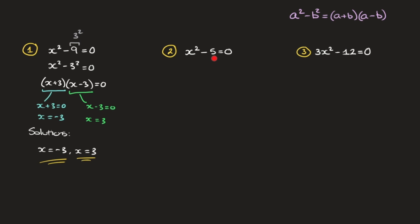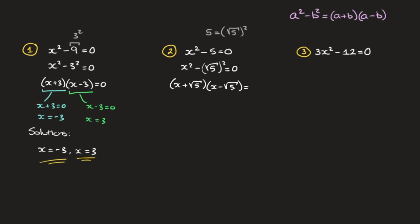We need to solve x squared minus 5 equals 0. This is slightly trickier than the first example because 5 isn't a nice square number. The trick here is to use the fact that 5 is equal to the square root of 5, squared. Using this fact we can rewrite this equation as x squared minus the square root of 5 squared equals 0. Now that we've written the left hand side as the difference of two squares, we can use our formula to write this in factored form: x plus root 5 times x minus root 5 equals 0.